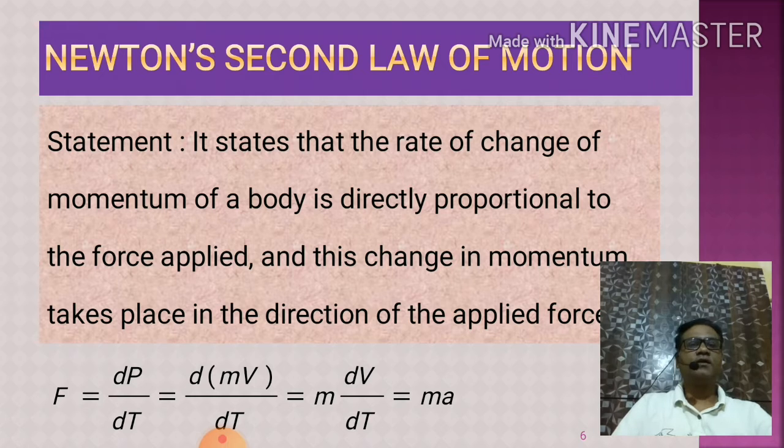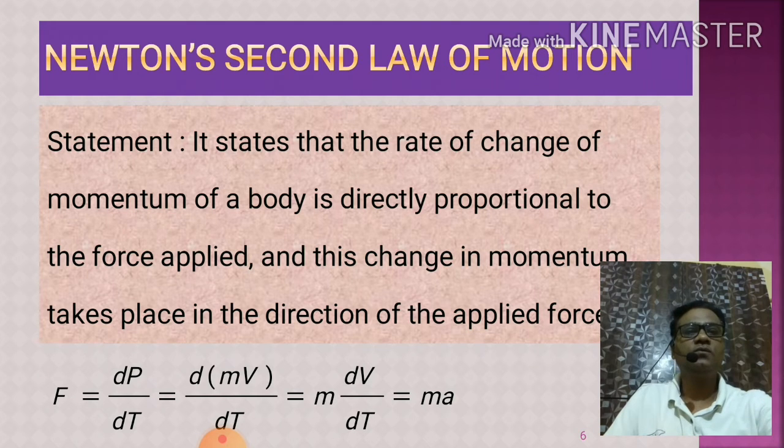So this can be shown by this mathematical expression: F equals dp by dt, equals d by dt of mv. So p is momentum, it is given by mass into velocity, mv. So equals m into dv by dt. d by dt is nothing but acceleration, so it equals ma. So F equals ma.